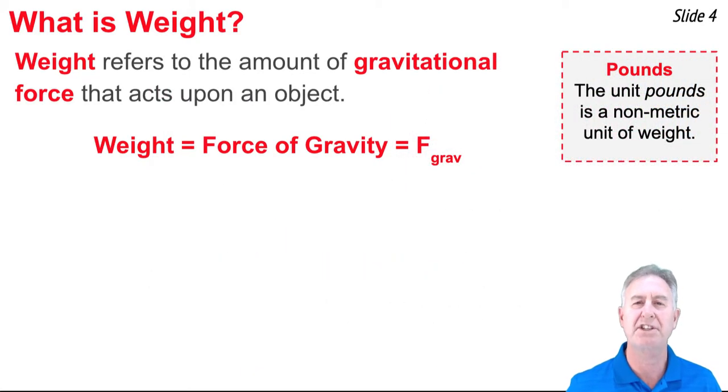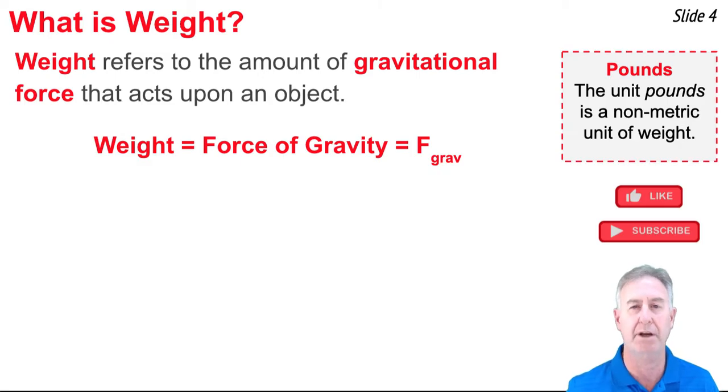If mass is the amount of stuff present in an object, then weight is the force of gravity that acts upon all this stuff. Weight is the force of gravity, and as such, we sometimes give it the symbol F for force and grav for gravity.